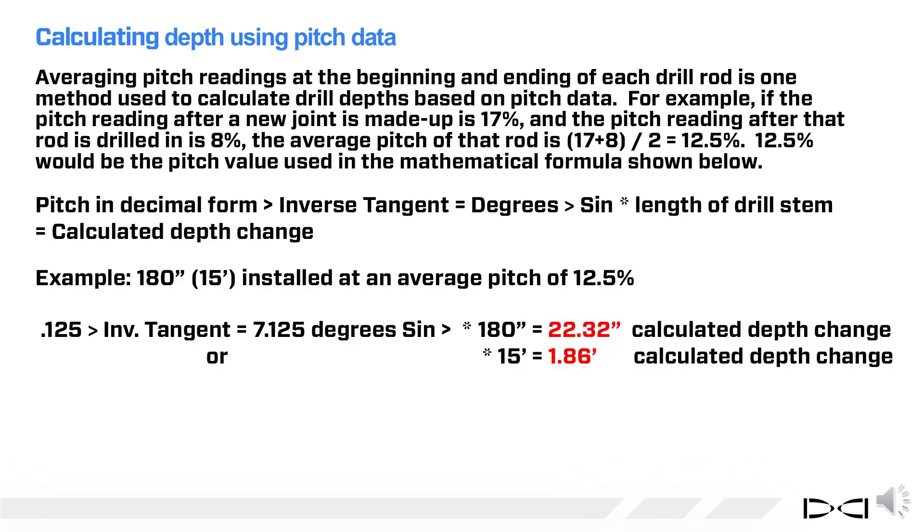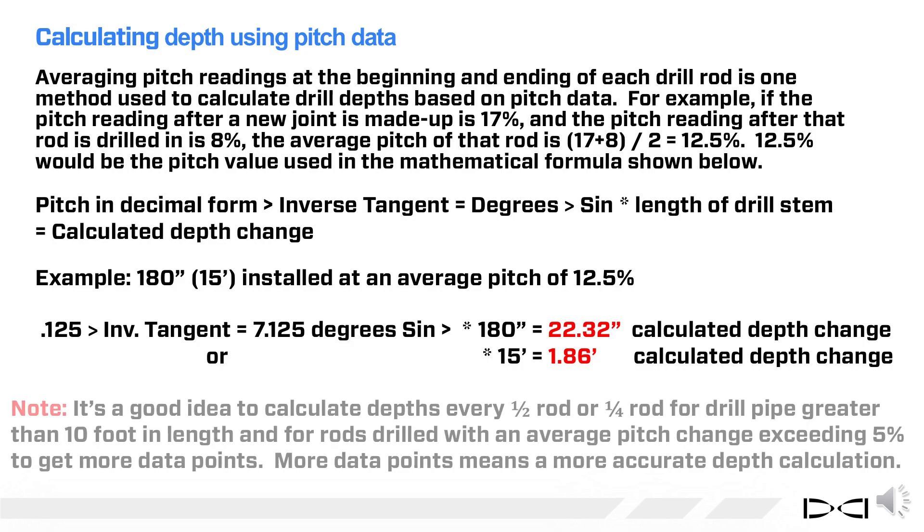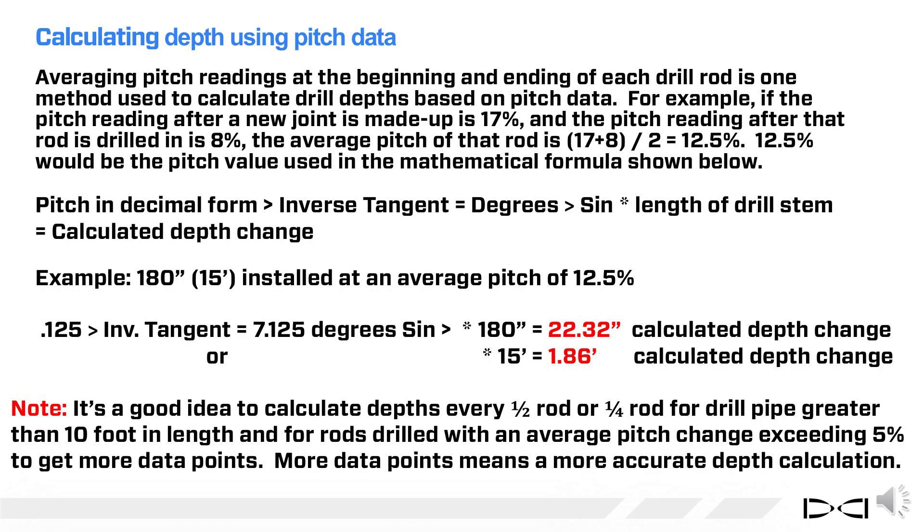So here's an important note. It's a good idea to calculate depths every half rod or quarter rod for drill pipe greater than 10 foot in length and for rods drilled in with an average pitch change exceeding 5% to get more data points. More data points means a more accurate depth calculation.